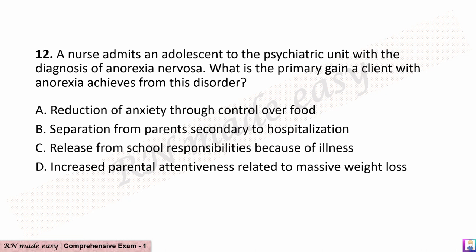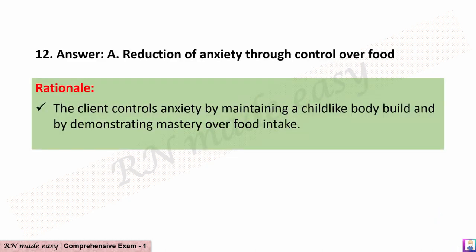Question 12. A nurse admits an adolescent to the psychiatric unit with the diagnosis of anorexia nervosa. What is the primary gain a client with anorexia achieves from this disorder? The correct answer is A: Reduction of anxiety through control over food. Rationale: The client controls anxiety by maintaining a childlike body build and by demonstrating mastery over food intake.